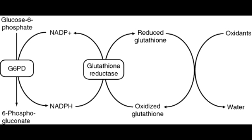Describe the clinical presentation of G6PD deficiency. The clinical presentation of G6PD deficiency is back pain followed by hemoglobinuria a few days later due to hemolysis. Hemolysis in G6PD deficiency can occur both intravascularly and extravascularly.